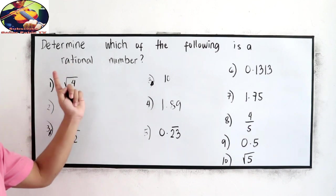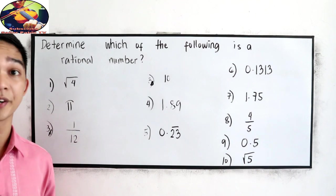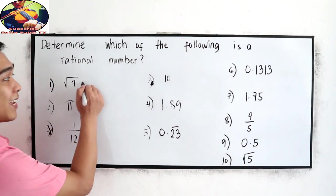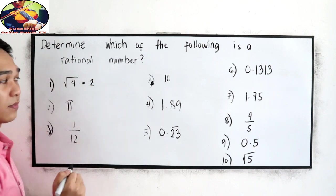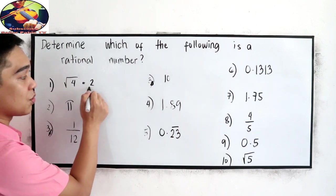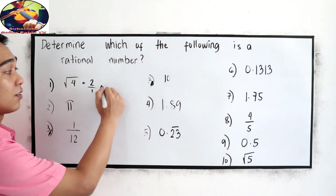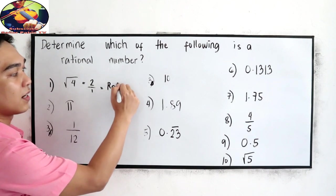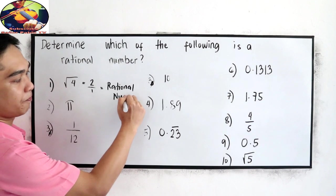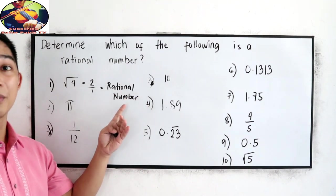Determine which of the following is a rational number. Number 1, square root of 4. We know that square root of 4 is equal to 2. And 2 can be written in rational form as 2 over 1. So, this is a rational number.